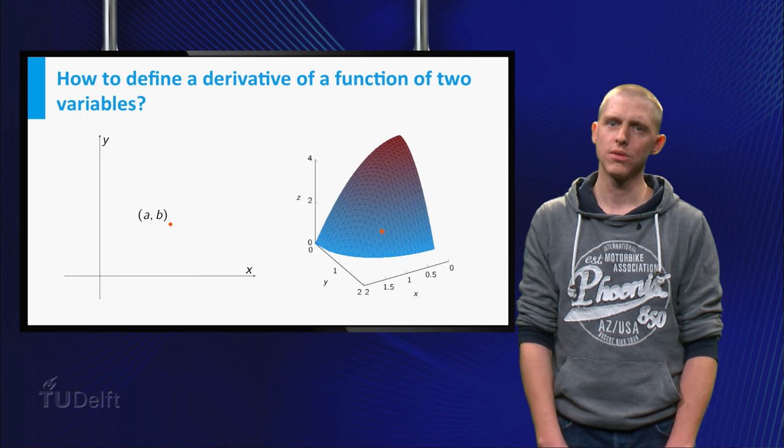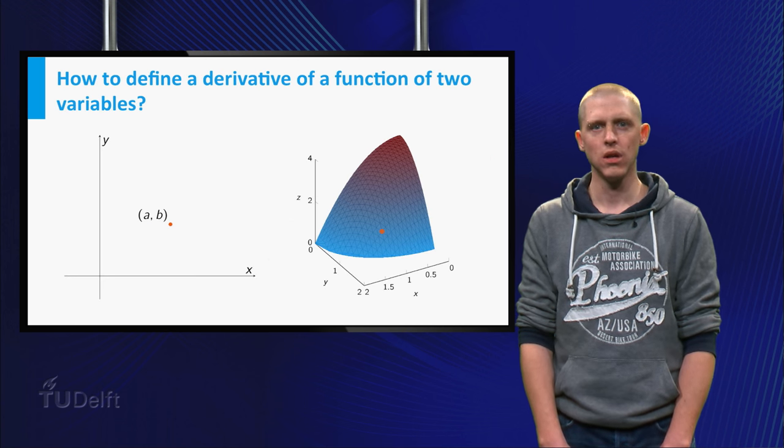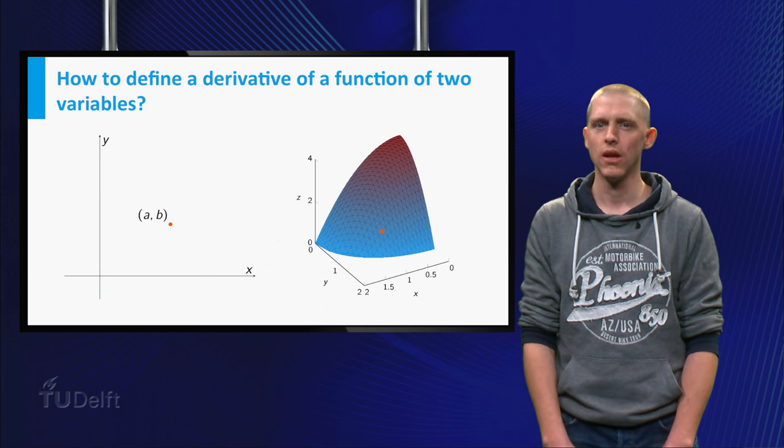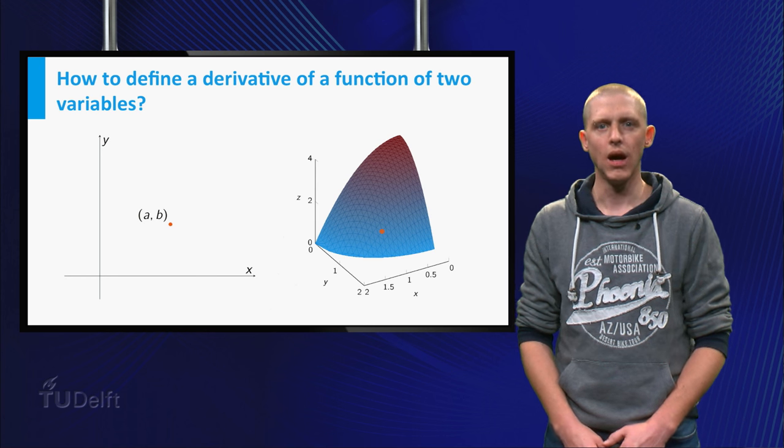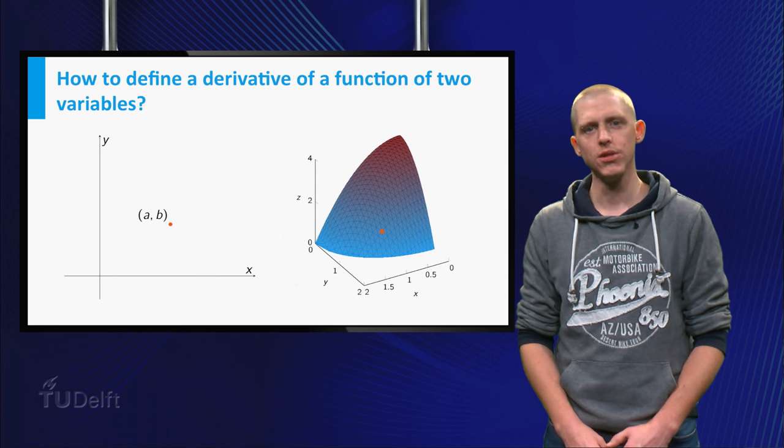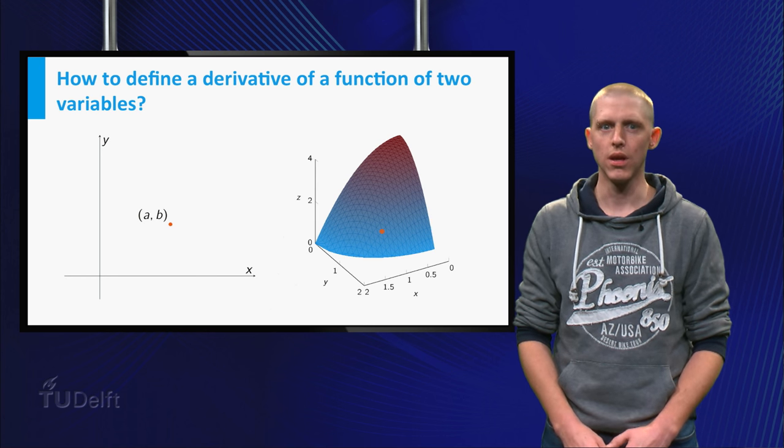Now suppose we have a function f of two variables, say x and y, and let (a,b) be a point in the domain of f. How do we describe the rate of change of the function at this point?